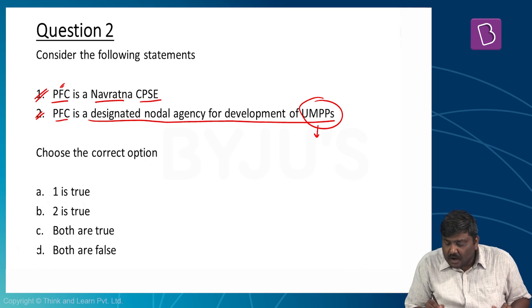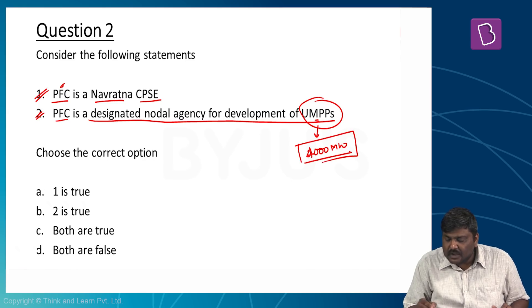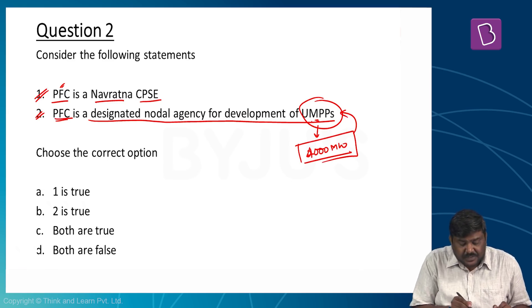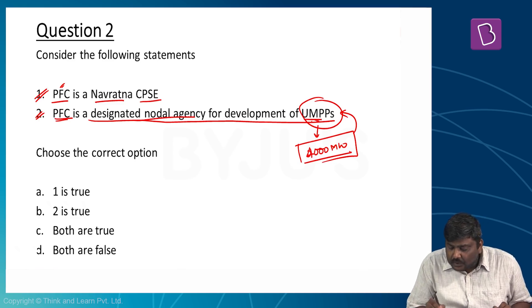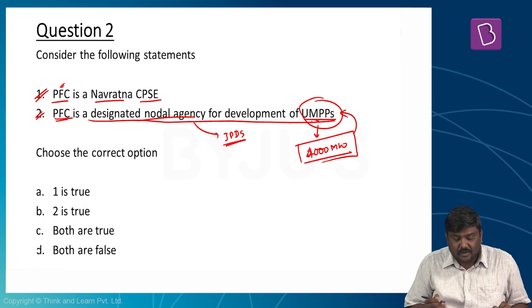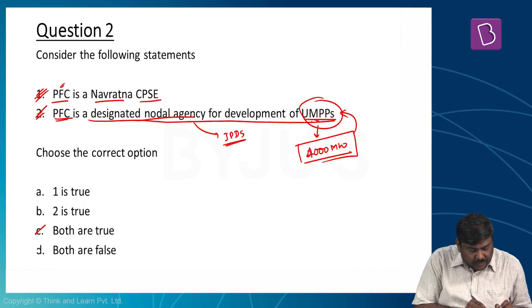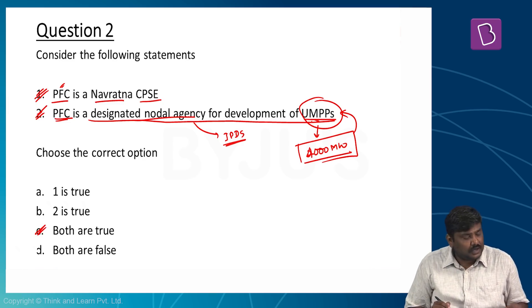Question two: PFC — Power Finance Corporation — is a Navaratna CPSE. Yes, correct. Second: PFC is a designated nodal agency for development of UMPPs — Ultra Mega Power Plants, which are thermal power plants of 4,000 megawatt capacity. PFC is also the nodal agency for IPDS — Integrated Power Development Scheme. Both statements are true, so the right option is option C.